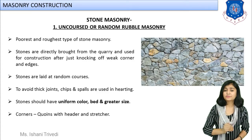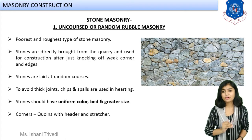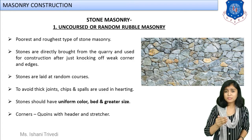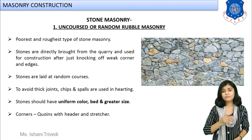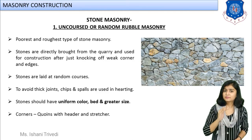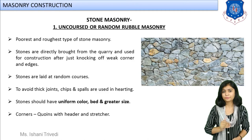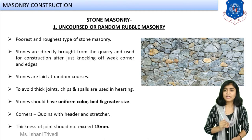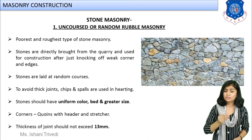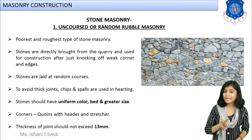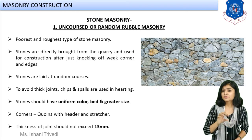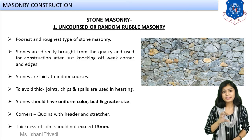Here is an example of uncoarse rubble masonry where the courses are not definite, yet the masonry construction obtained looks good. The joints will be very wide, so it is necessary to provide chips and spalls in between, but joints should not exceed 13 mm.